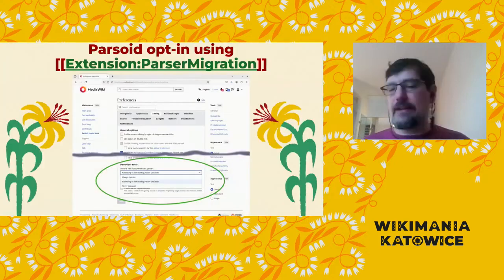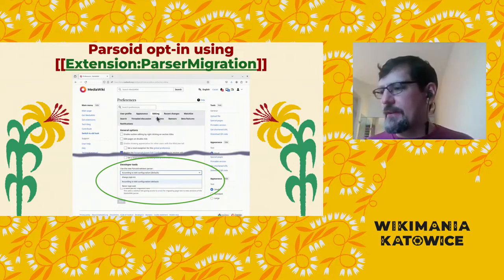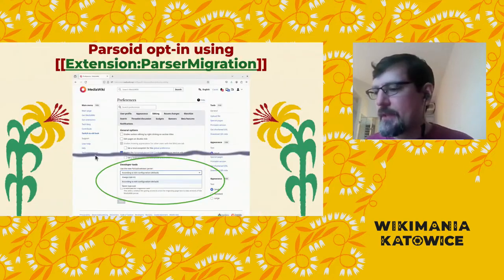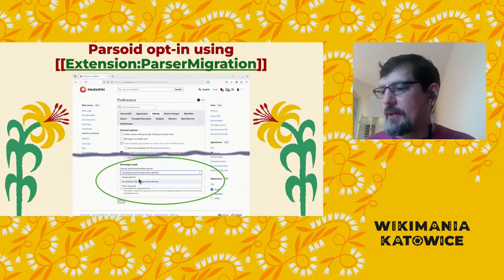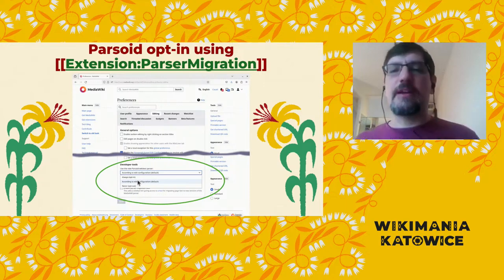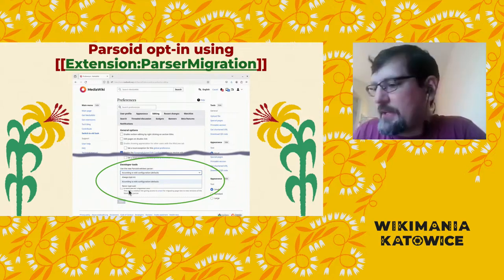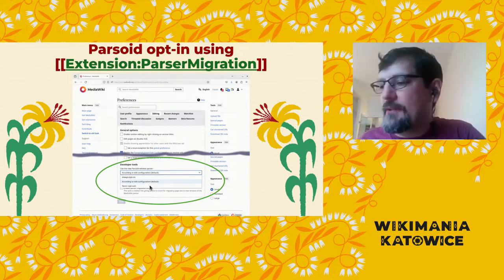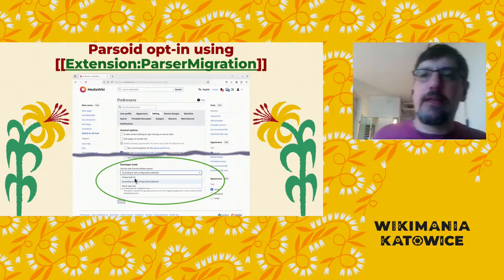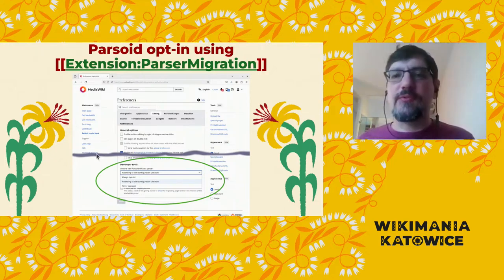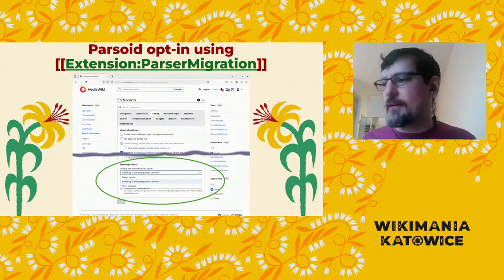This is what the preference added by the Parser Migration extension looks like. In your editing preferences, if you scroll all the way down to developer tools, you have a 'use the new Parsoid wikitext parser' option. There are three settings: Always to opt-in; Never to opt-out if it's breaking one of your workflows — we think it's very important that you can opt-out if you need to get work done on wiki; and 'according to wiki configuration' as the default. There are also links to switch to and from Parsoid in the sidebar on individual pages.